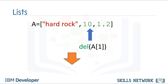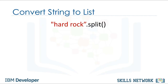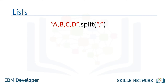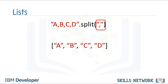We can delete the second element — this operation removes the second element of the list. We can convert a string to a list using split. The method split converts every group of characters separated by a space into an element of a list. We can use the split function to separate strings on a specific character known as a delimiter — we simply pass the delimiter as an argument, in this case a comma. The result is a list where each element corresponds to a set of characters separated by the comma.